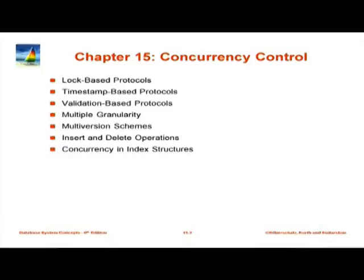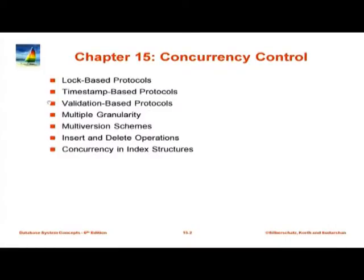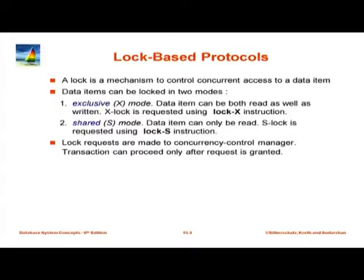The next chapter is Concurrency Control. What is concurrency control? It is how the system controls access to resources, and there are two things which are typically done. First, there is usually a locking system which lets you prevent concurrent access, and on top of it there is usually a protocol which is followed. Some protocols are based purely on locking, some are based on other mechanisms. A protocol is a set of rules which you must follow in order to prevent problems.